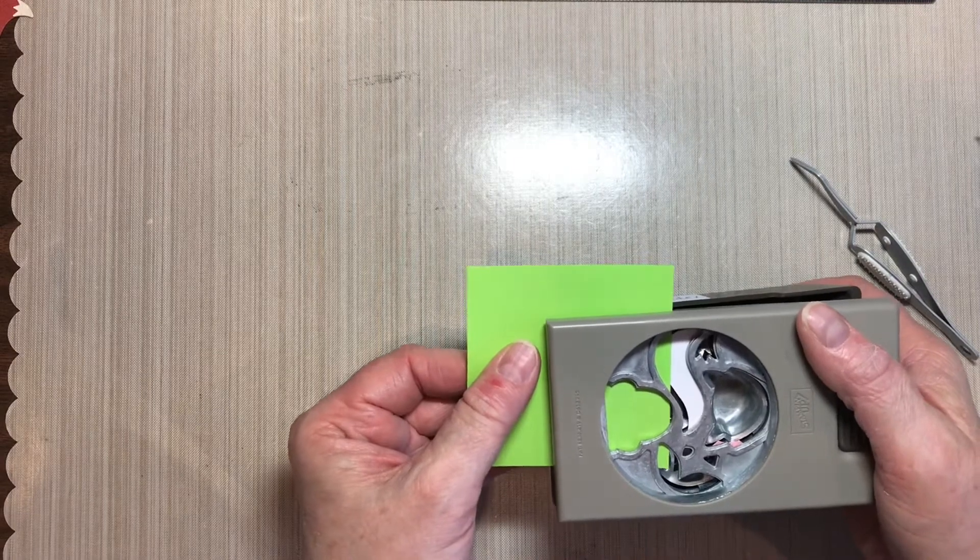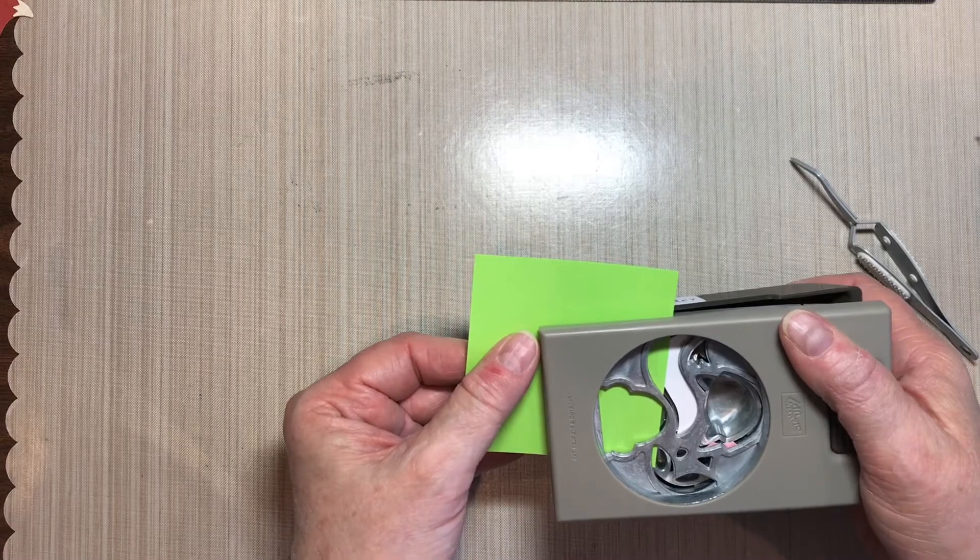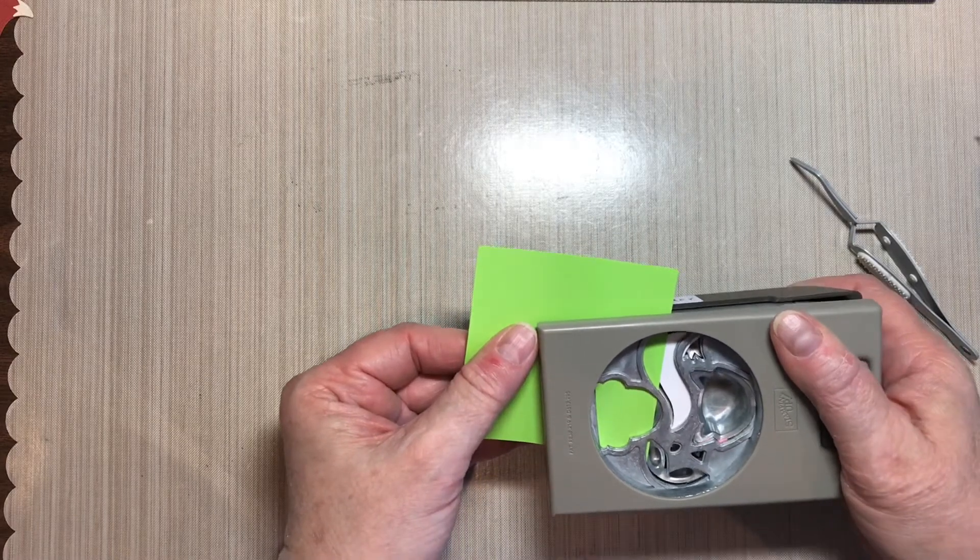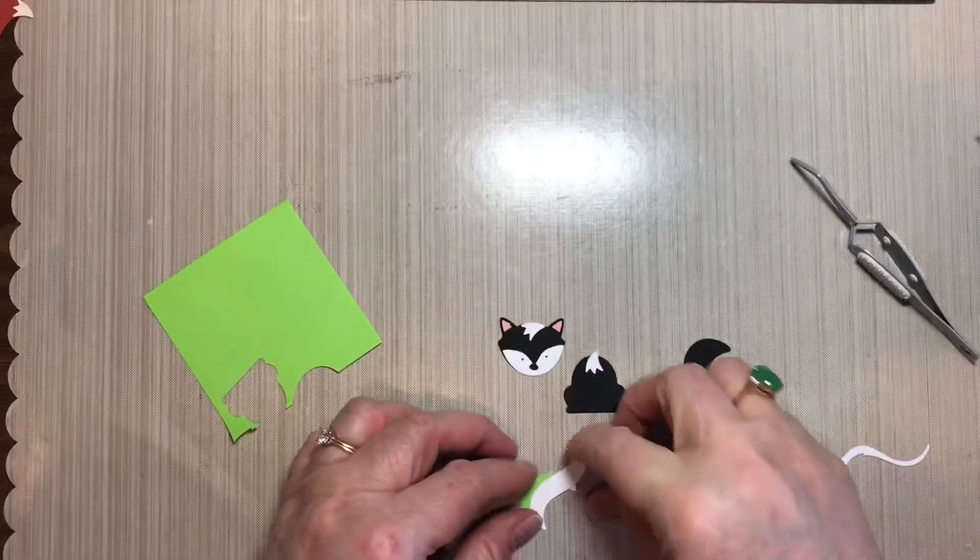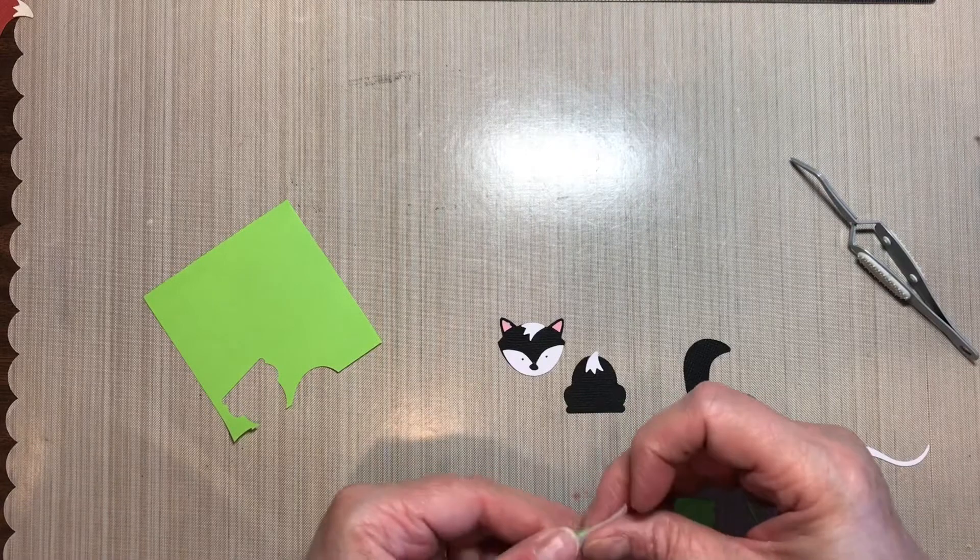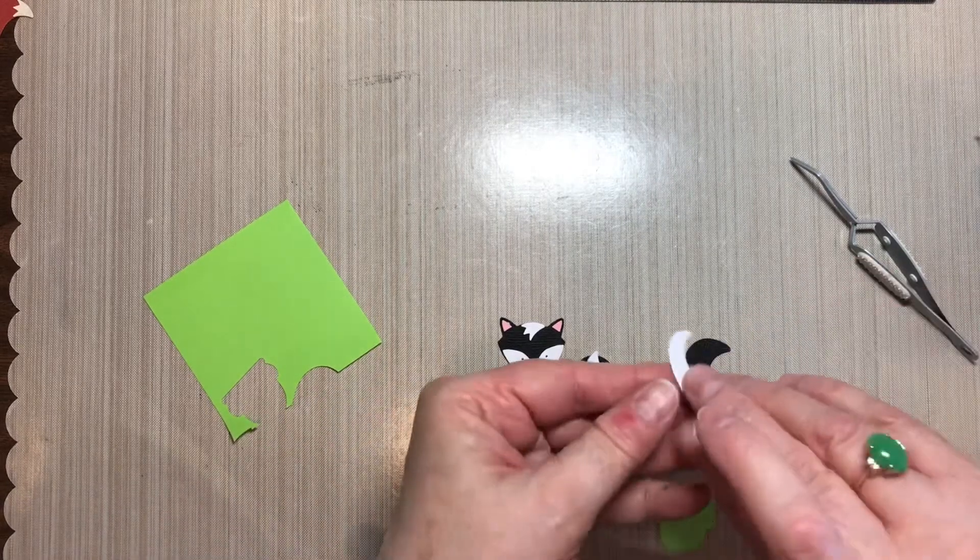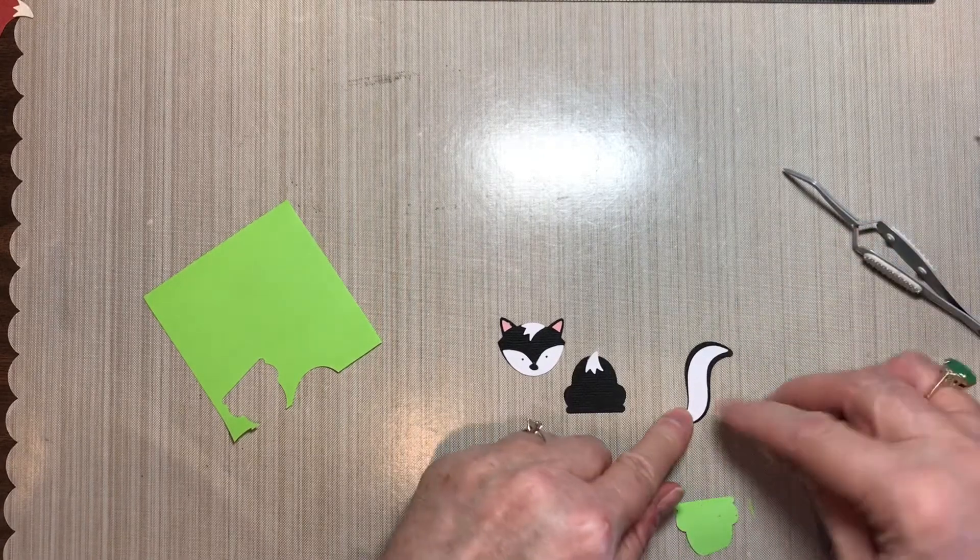And I just kind of eyeball it and decide how much of it that I want to trim away. Give it a punch. And then audition it back on the tail.